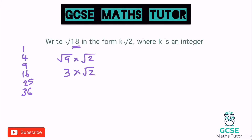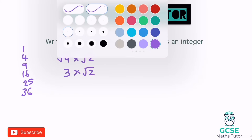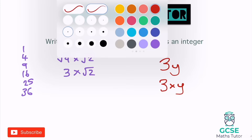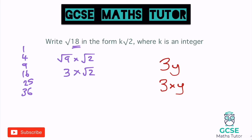I like to link this back to algebra whenever I can. Just like when we have 3y, that means 3 times y — in algebra we get rid of the times sign. We're going to do exactly the same here: rather than writing 3 times the square root of 2, I'm just going to write 3 root 2. So we've written it in the form k root 2 where k is an integer, meaning whole number — k in this instance is 3.